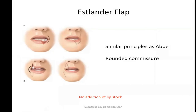The Slander flap uses the same principle as the Abbe flap, based on the labial artery, but for sections involving the commissure. The problem with the Abbe flap is that it creates a rounded commissure, and as with the Abbe, there is no addition of lip stock. You must remember not to get below the minimum nine centimeters total lip stock, as that will make the patient functionally impaired. Lip switches do not offer any additional lip stock for reconstruction.